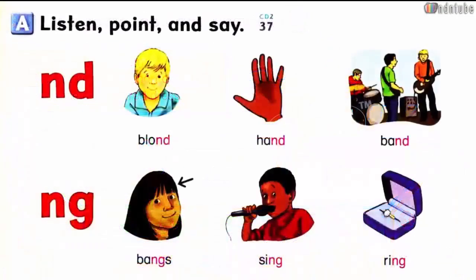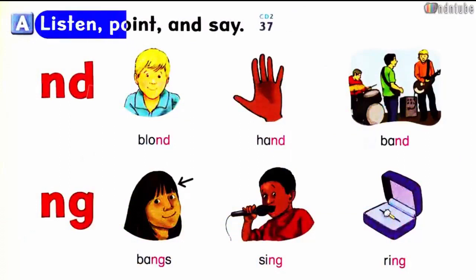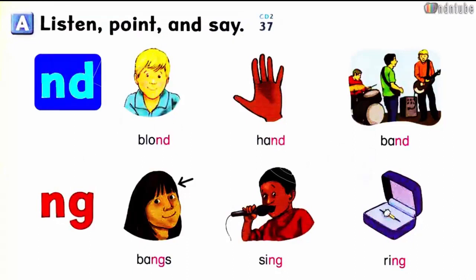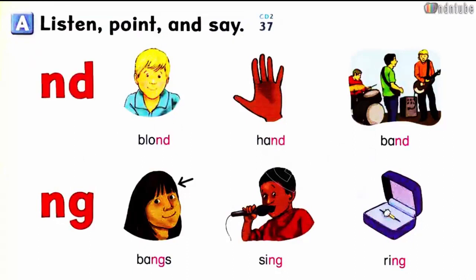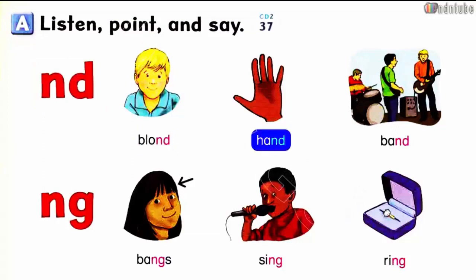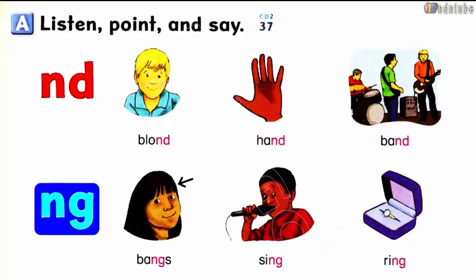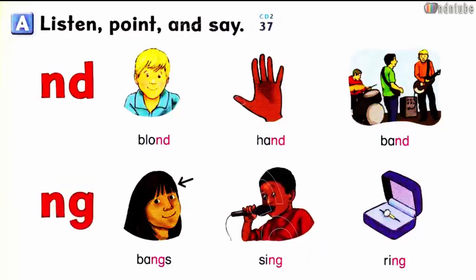Page 54. Let's Read. A: Listen, point, and say. N-D: Blonde. Hand. Band. N-G: Bangs. Sing. Ring.